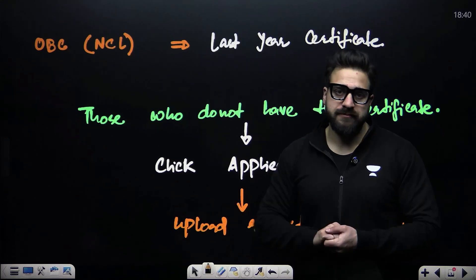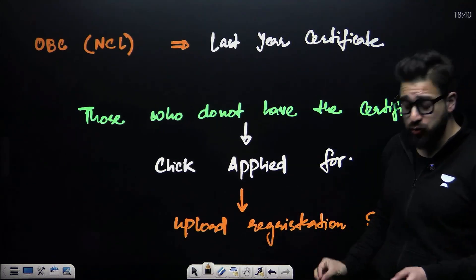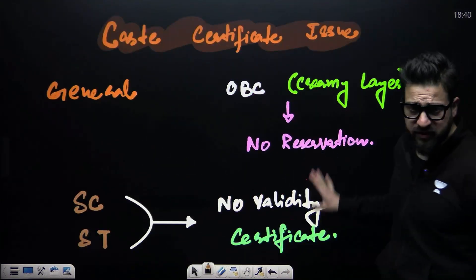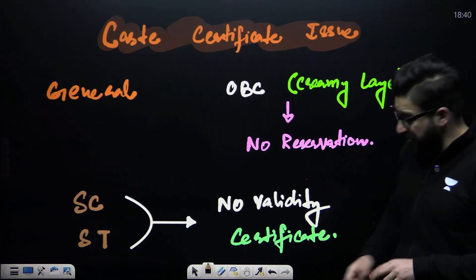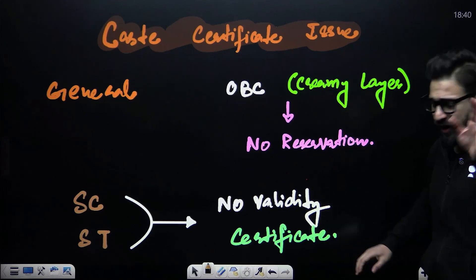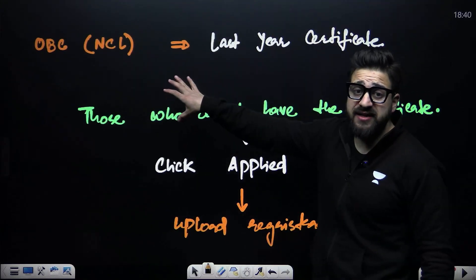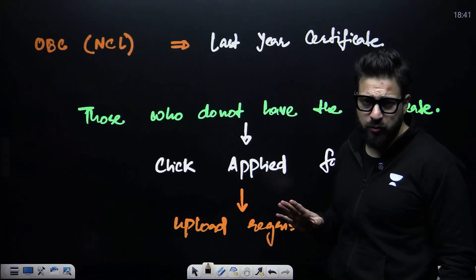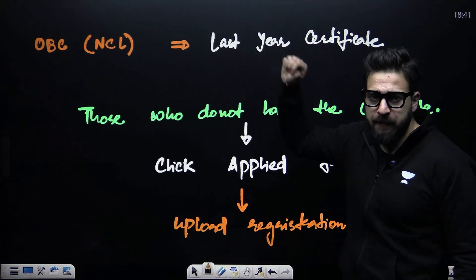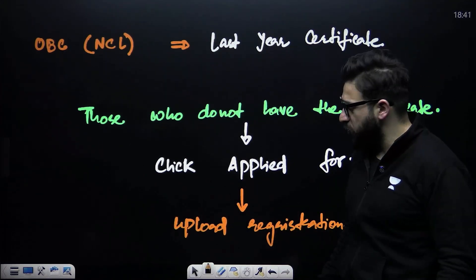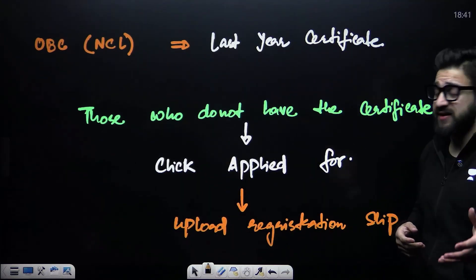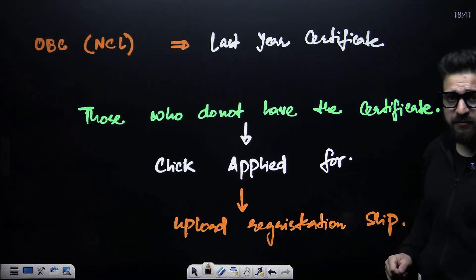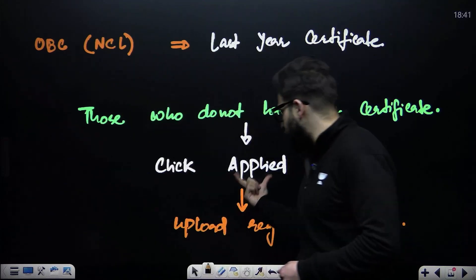To summarize: for General category students, fill the form as usual. For SC and ST, upload the CAST certificate you have. If your CAST certificate is expired, upload last year's certificate — you can submit the new one at counseling. For those who don't have a CAST certificate yet, click 'Applied For' and upload the registration slip you received when applying.